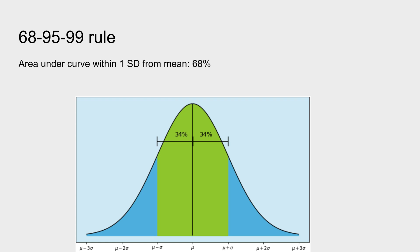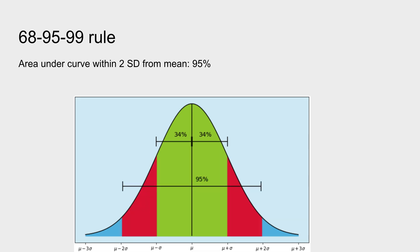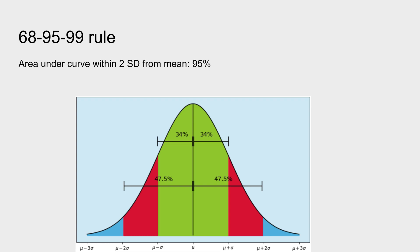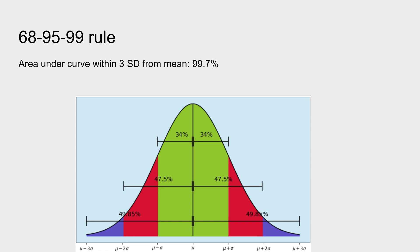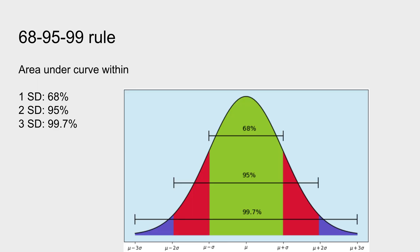When we extend to two standard deviations — the red plus green area — 95% of the area is captured, which splits into 47.5% on each side. For three standard deviations, the area captured within the purple, red, and green regions totals 99.7% of the area. In short: within one standard deviation, 68% of the area is covered; within two, 95%; within three, 99.7%. Hence, the 68-95-99 rule.